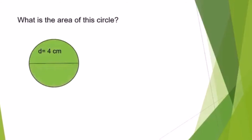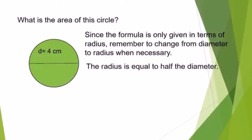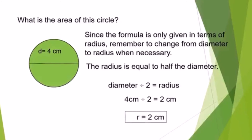Now let's find the area of another circle. As you can see, what is given is the diameter of the circle. Since the formula is only given in terms of radius, remember to change from diameter to radius when necessary. The radius is equal to half the diameter. Since the diameter is 4 centimeters, diameter divided by 2 equals radius. Therefore, 4 centimeters divided by 2 equals 2 centimeters — the radius of the circle is 2 centimeters.